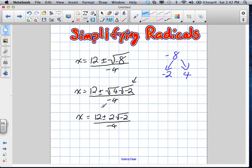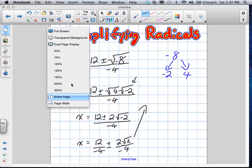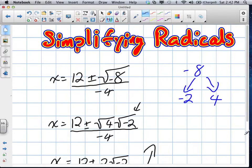Now, I want you to notice, I'm going to split this up a little. Technically, this can also be written like this: 12 over negative 4 plus or minus 2 root 2 over negative 4. Okay? I've split it a little. Just so I can start to simplify some of the other terms. I'm just going to bring it up here.